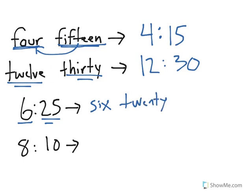And as you will probably have guessed, we could do the same exact thing for our word form at the bottom, which is eight ten. The hour comes first, 8, then 10, the number of minutes that have passed.